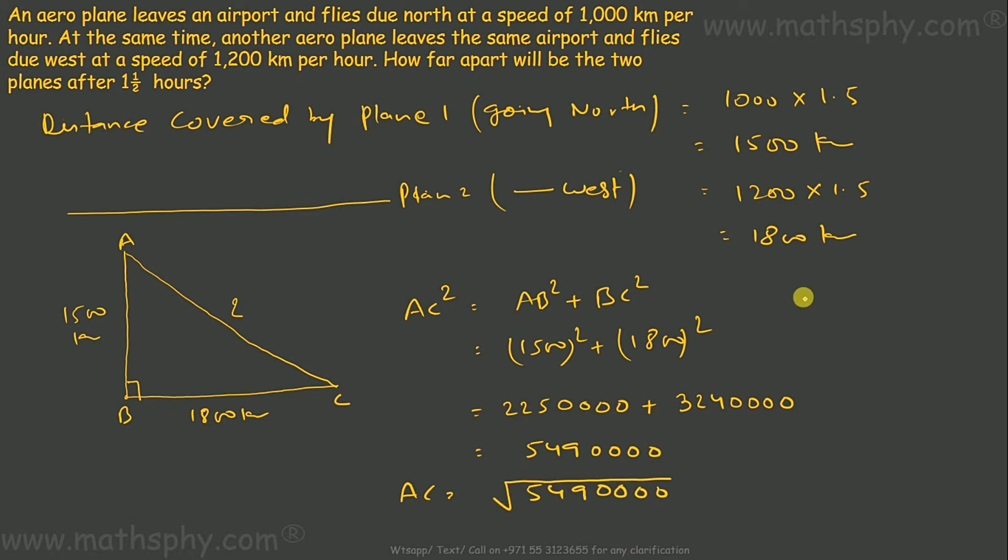Now, let's solve this root. This can be written as 3 into 3 into 61 into 100 into 100. These two 3s will come out as 3, these two 100s will come out as 100, 61 stays inside, so this is 300 root 61.